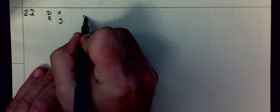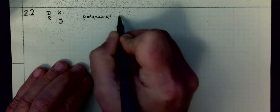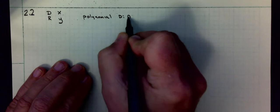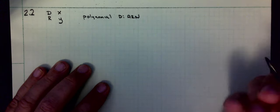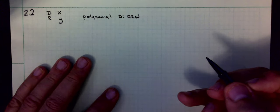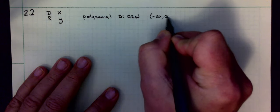Remember that the domain is your x values, the range, your y values. If it is a polynomial function, the domain is always going to be all real numbers. The way we write all real numbers in interval notation would be negative infinity to infinity.